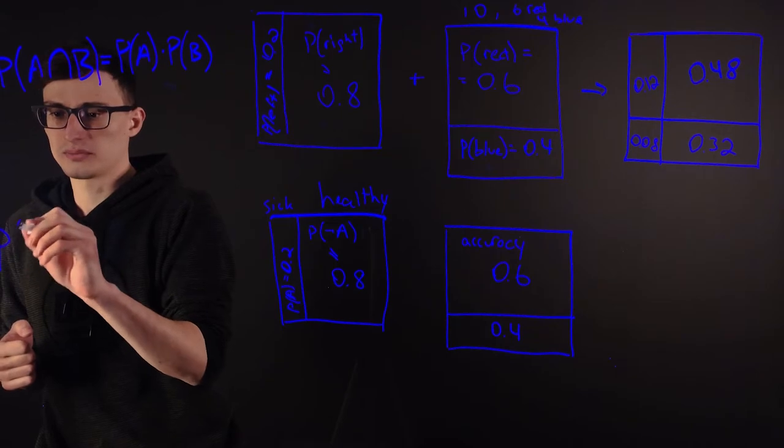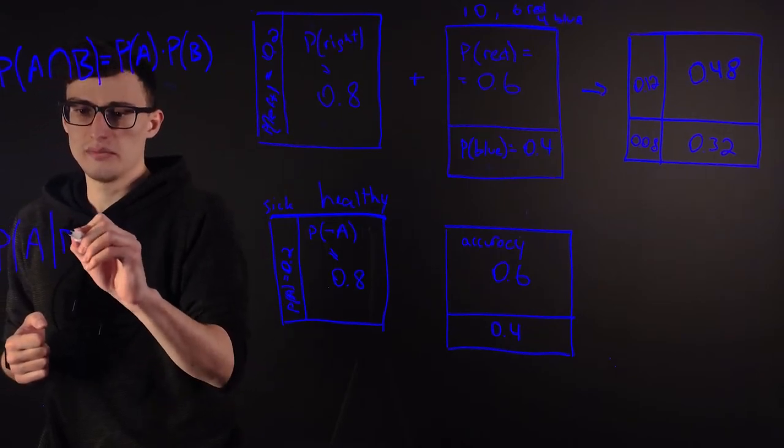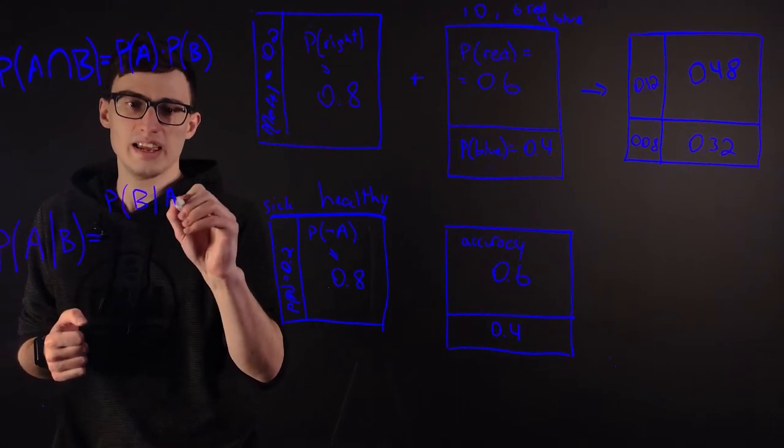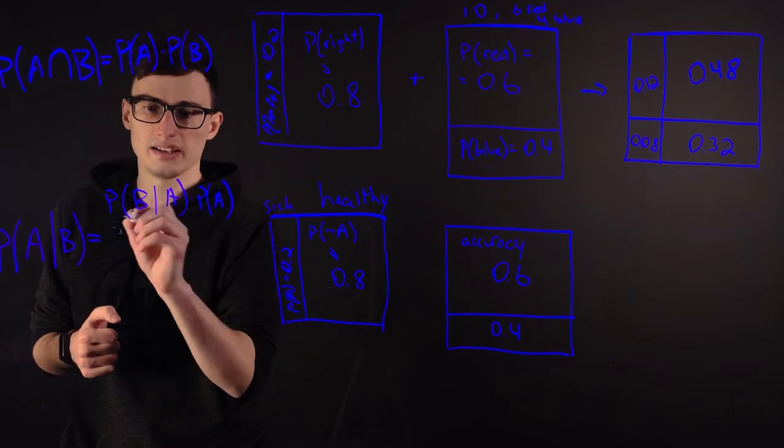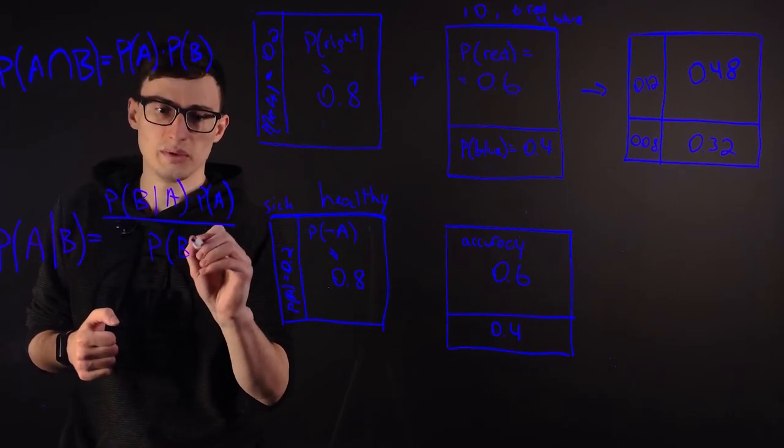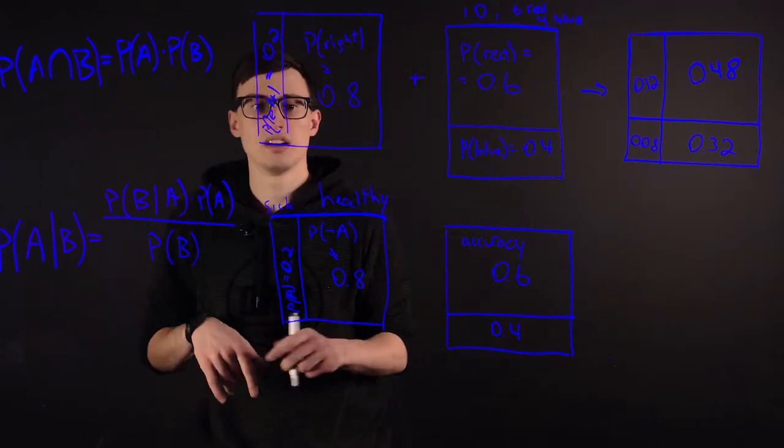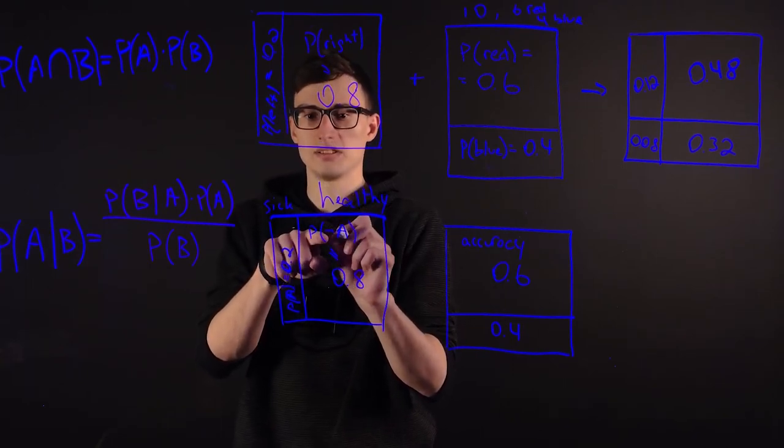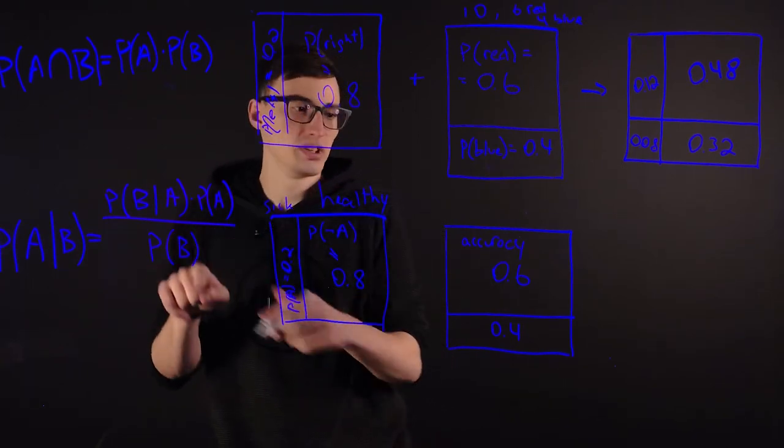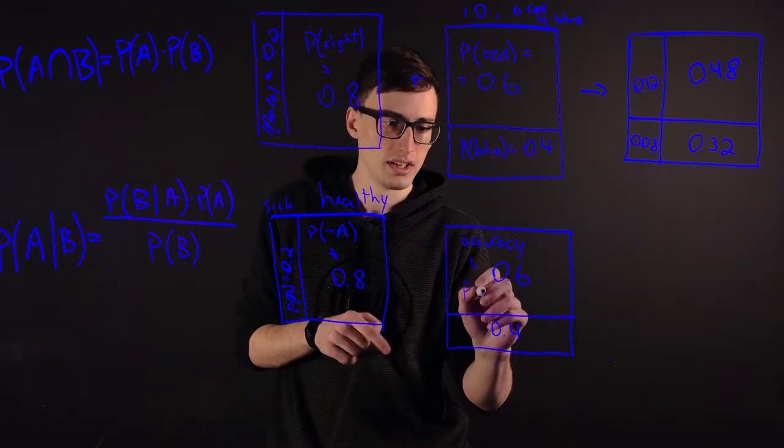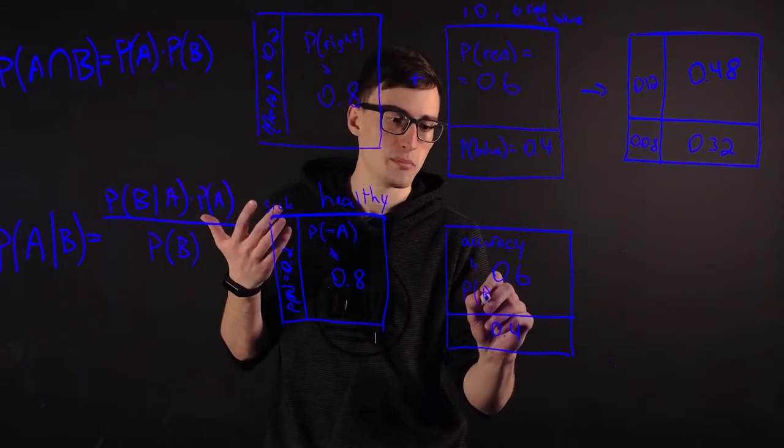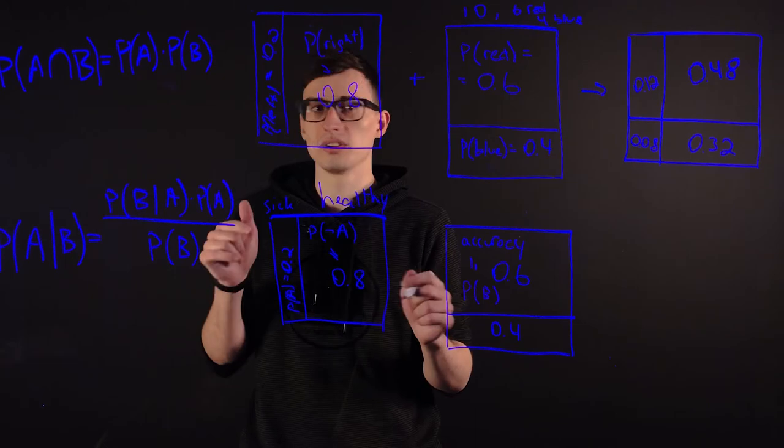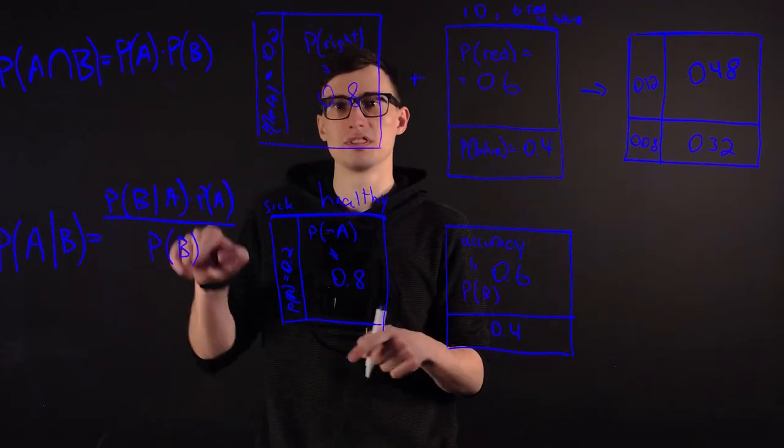We write conditional probability like this. Probability of A given B equals probability of B given A times probability of A divided by probability of B. So, in our case, like I said, probability of A is that you're sick. So, obviously, probability of not A, this little single means not A, it's 0.8. Probability of B is accuracy, that you get a positive test result, that's what it is here. And, obviously, this is probability of not B. So, let's plug it in, make the same square, and see how we use this formula to get the result.